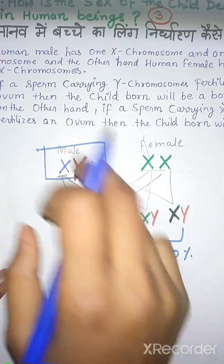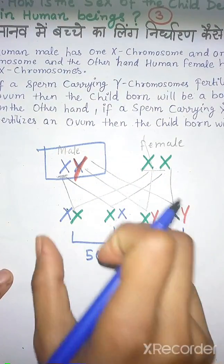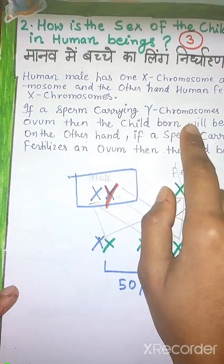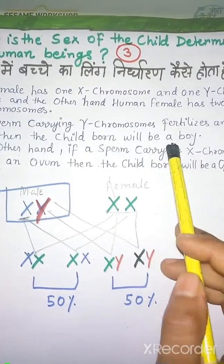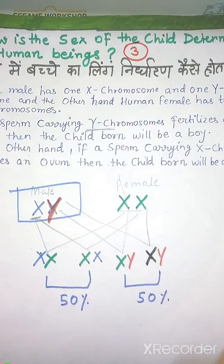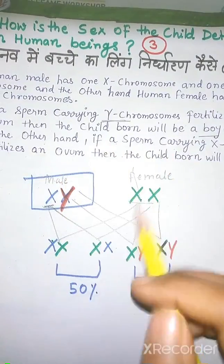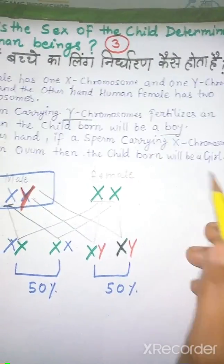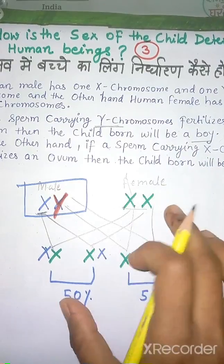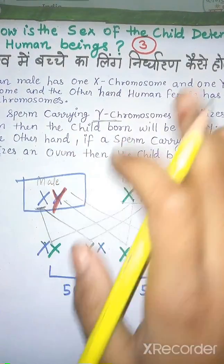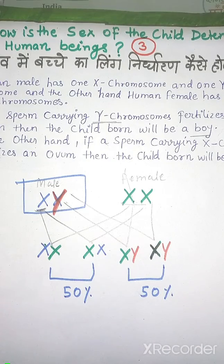It is the male — not the female — who decides whether the baby will be male or female. The Y chromosome from the sperm determines that the baby will be a boy. If the sperm carries an X chromosome, the child will be a girl. 1.5 marks for theory and 1.5 marks for the cross — total 3 marks. Remember these two important questions.